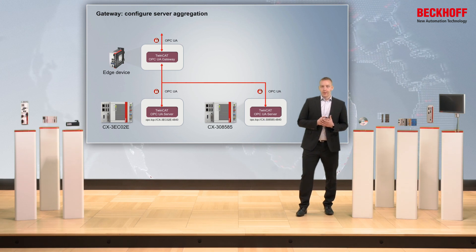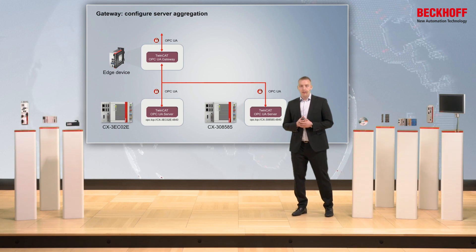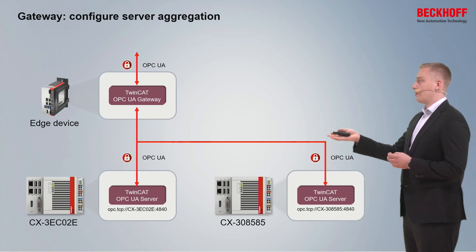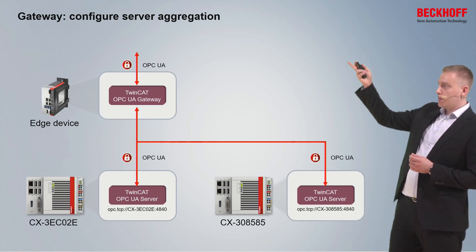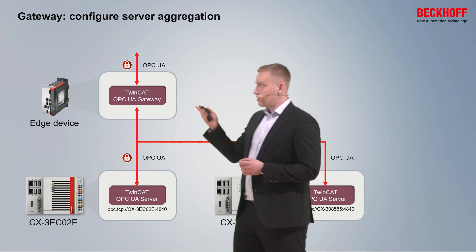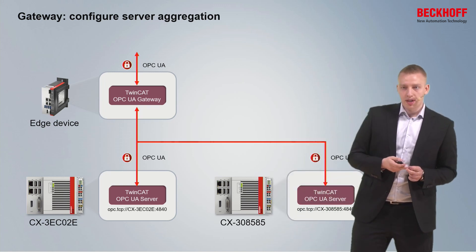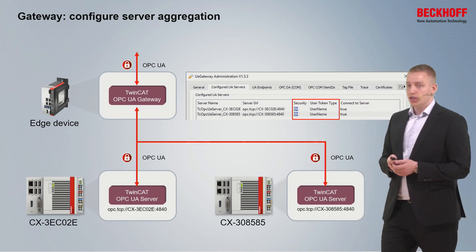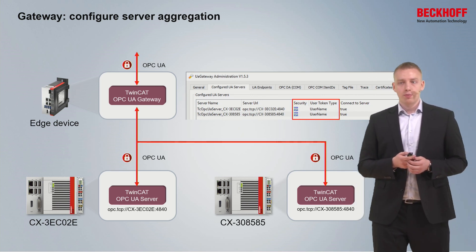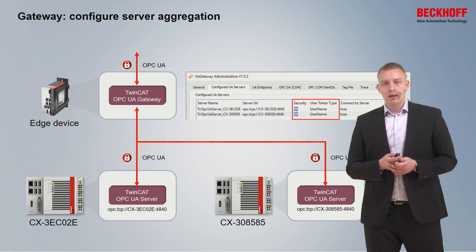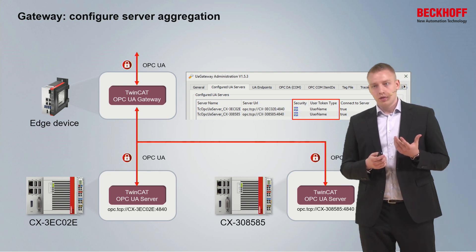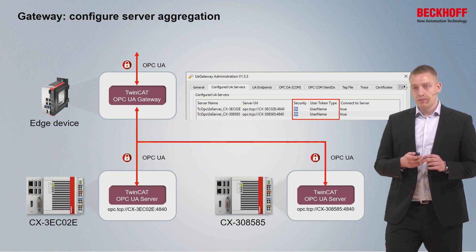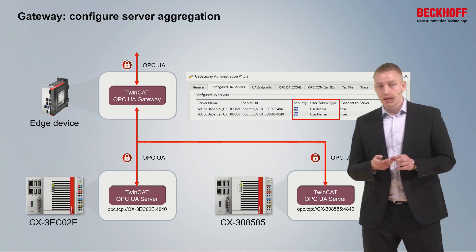Now let's look at the TwinCAT OPC UA gateway. One key use case is server aggregation: two controllers with integrated OPC UA servers are aggregated by the TwinCAT OPC UA gateway. A client connecting to the gateway can access both underlying servers with a single connection. The connection to the underlying OPC UA servers is only configured on the gateway side, so the client only needs to manage its connection to the gateway — the gateway completely handles the underlying connections to both OPC UA servers.